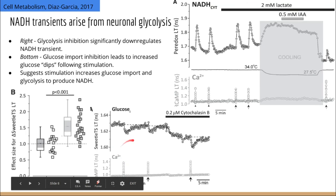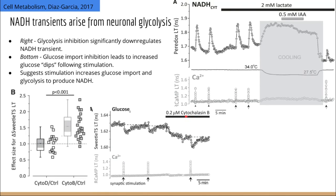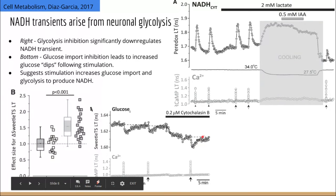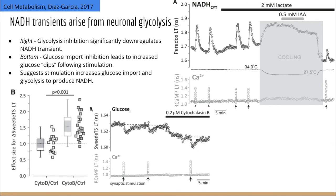In these bottom panels, they observed that inhibition of glucose import with cytochalasin B significantly increased the decline of glucose following stimulation. Using another glucose-sensitive biosensor called SWEDI-TS, when net glucose import was stopped, glucose concentrations dipped. In other words, glucose is being burned very quickly during neuronal transients, and blocking glucose import causes these dips to increase — suggesting that glucose is being utilized to produce NADH and not lactate.